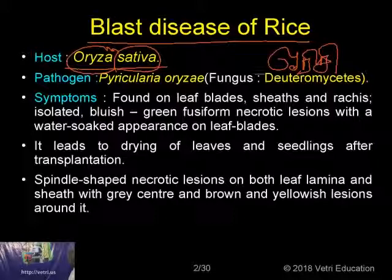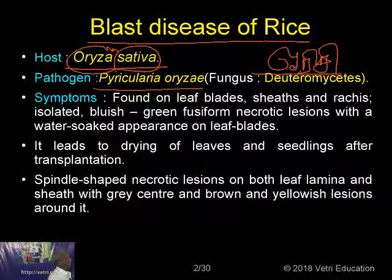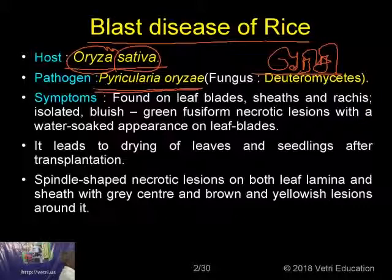So the species name of the pathogen will be the genus name of the host — this is the nomenclature rule they follow. Pyricularia oryzae is the pathogen name; Oryza sativa is the host name. Pyricularia oryzae belongs to the Deuteromycetes group. If you understand this nomenclature principle and the meaning of the names, they become very easy to remember — you just need to learn a few Latin and Greek words.